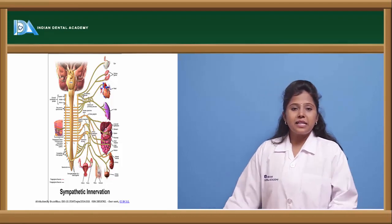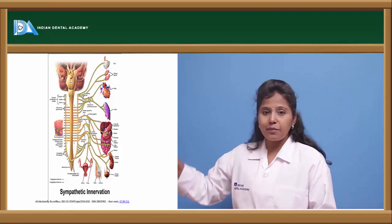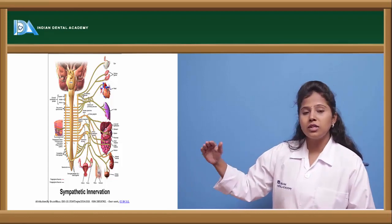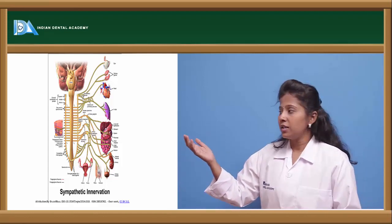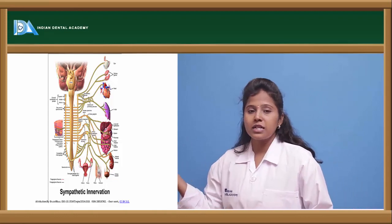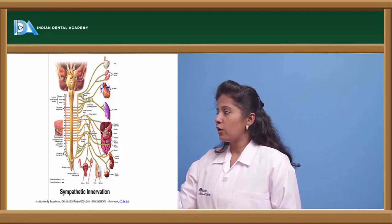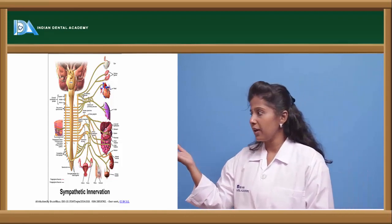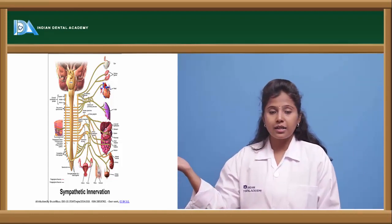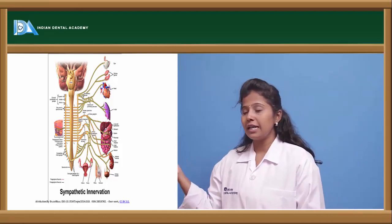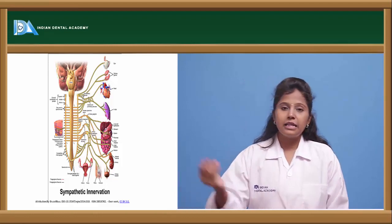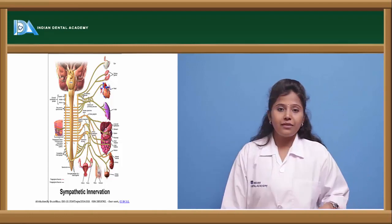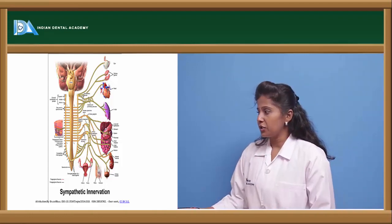Here we can see the sympathetic innervation. The nerves supplying the eye cause dilation of the pupil; they cause inhibition of secretion of saliva; they cause increased heart rate; they cause bronchial dilation; and in the kidneys, they cause relaxation of the urinary bladder. These are a few of the effects of sympathetic innervation.